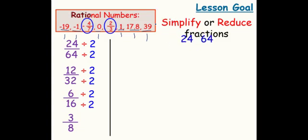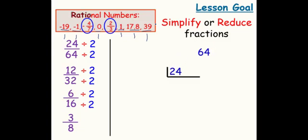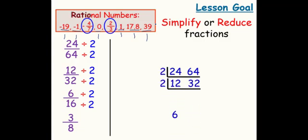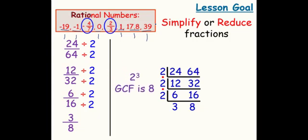This should look very familiar to the factor bracket when we're trying to find the LCM and the GCF. We factored out a 2, then another 2, and one more 2. So when we looked at 3 and 8, we can see that 3 and 8 are relatively prime. So that means we can find our GCF by multiplying 2 times 2 times 2, which is 8, or 2 cubed.